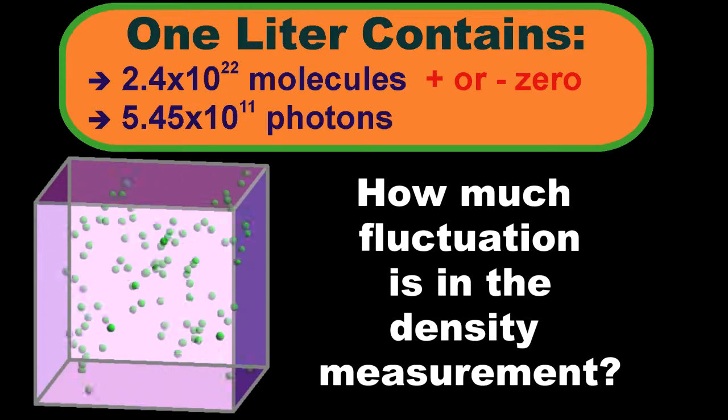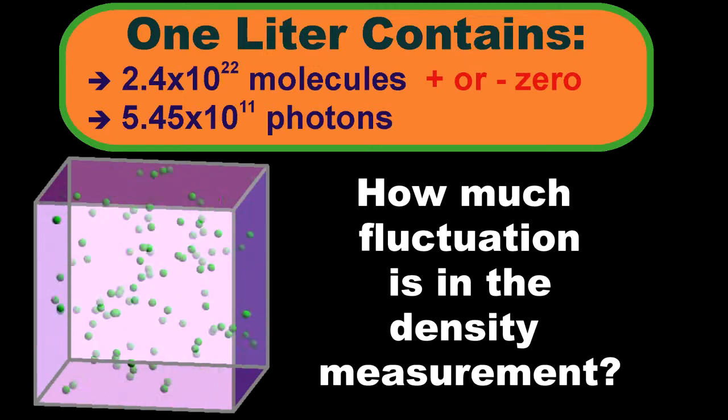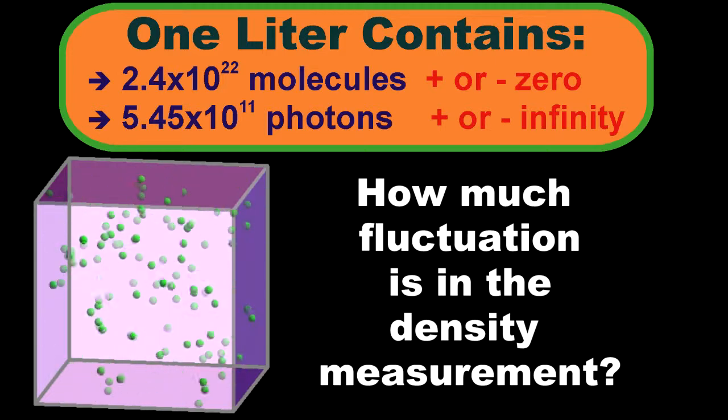However, when you use the black body formula to calculate the fluctuations in the number of photons, you get the first surprising result. It's infinite.